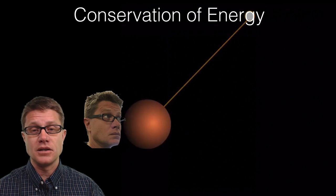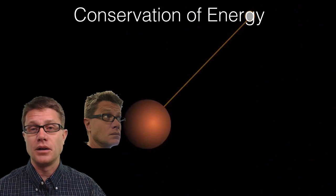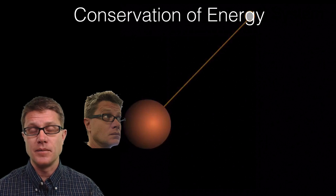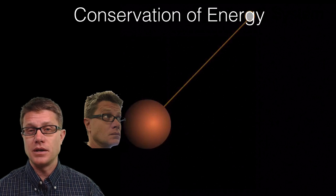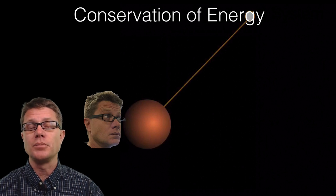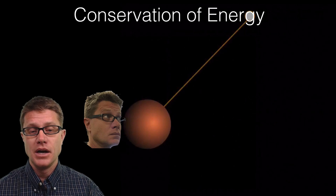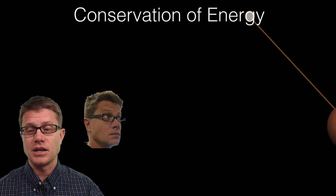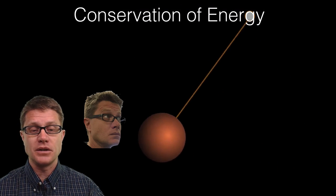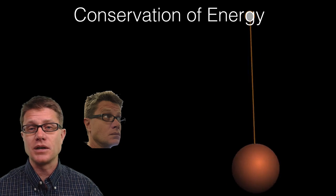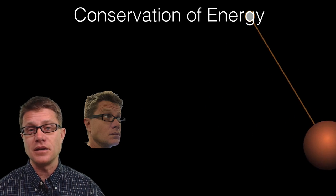And so if we say this is a system, me and a bowling ball on a string, if we say that's the system, we're going to have conservation of energy within that system. So that bowling ball has a certain amount of potential energy. And when I let it go, it's going to be converted to kinetic, back into potential energy. But it's not going to hit me in the head because we're not going to have energy coming into the system.